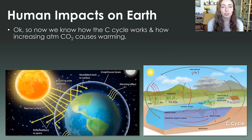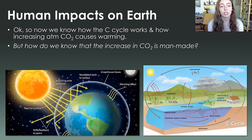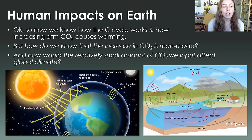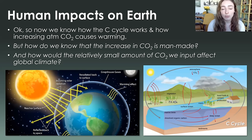Like I mentioned in the previous videos, we went over how the carbon cycle works and how increasing carbon dioxide and other constituents in the atmosphere causes warming through the greenhouse effect. The major questions I want to answer through this video are: how do we know that the increase in carbon dioxide is manmade? And two, how does the relatively small amount of carbon dioxide that we input to the atmosphere compared to other natural systems affect global climate?